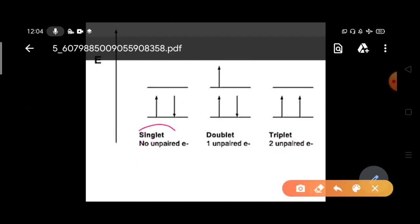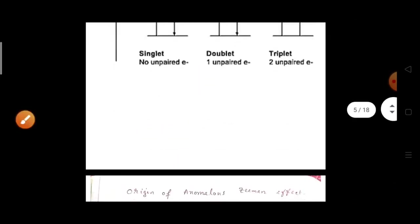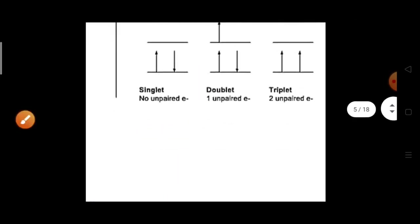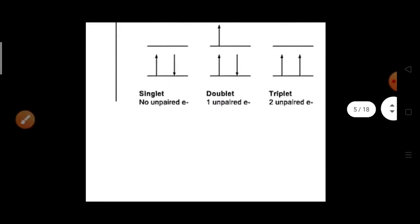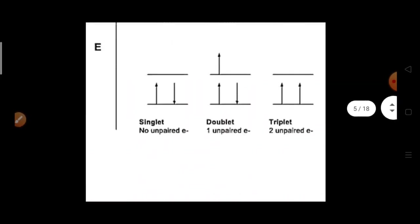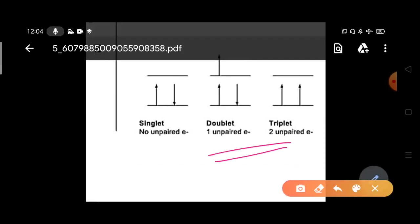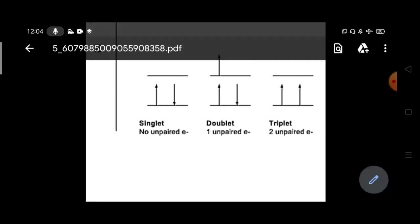In the normal Zeeman effect you do not need to consider spin, but in the anomalous Zeeman effect you must consider the spin effect of the electron as well. That is the main difference between the normal and anomalous Zeeman effect. Also, the magnetic field in the case of anomalous Zeeman effect should be lower or weaker — we will discuss why.